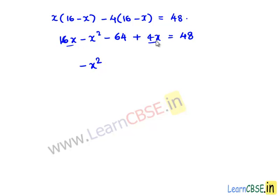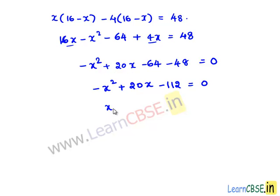Minus x² plus 16x plus 4x is 20x minus 64. And transposing 48 to left hand side, we get minus 48 is equal to 0. So minus x² plus 20x minus 112 is equal to 0. This equation can also be written as x² minus 20x plus 112 is equal to 0.